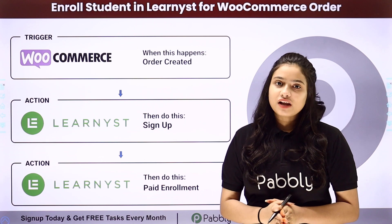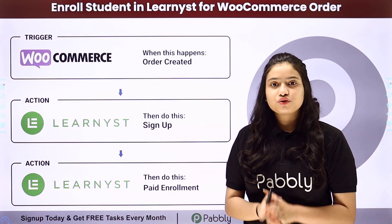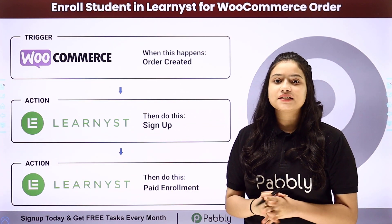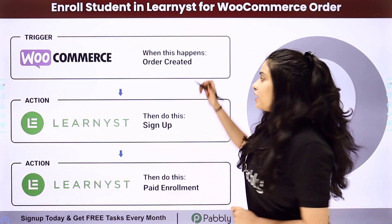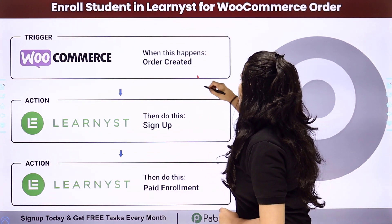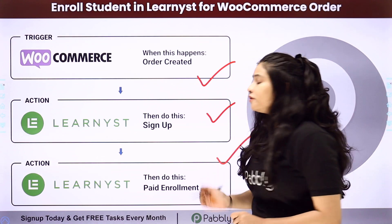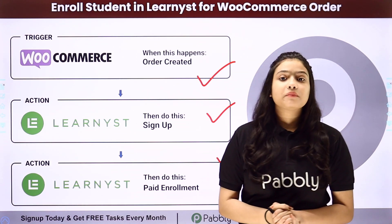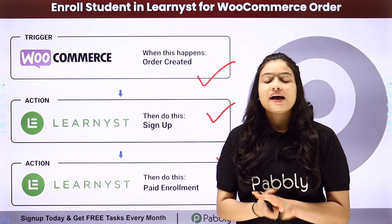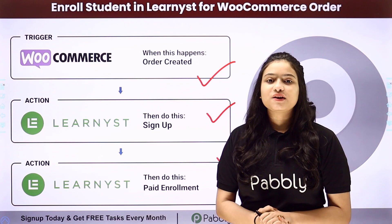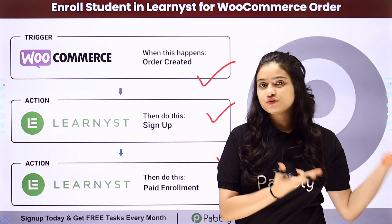To automate this entire process, we will have to integrate all these applications using an amazing automation software — Pably Connect. We have WooCommerce in our trigger and Learnist in our action, and we will be connecting both of them using Pably Connect. To learn this entire automation step by step, let me take you all to my screen.